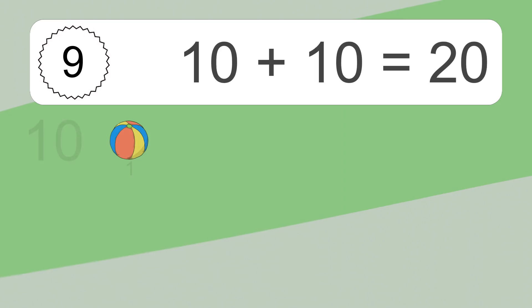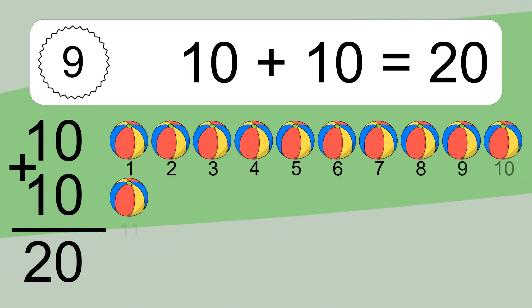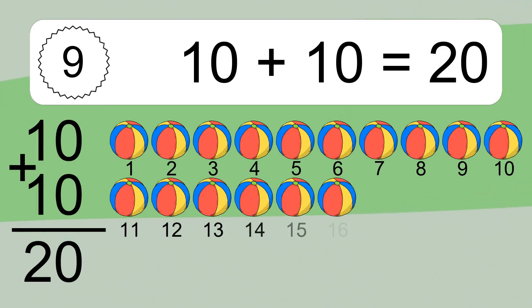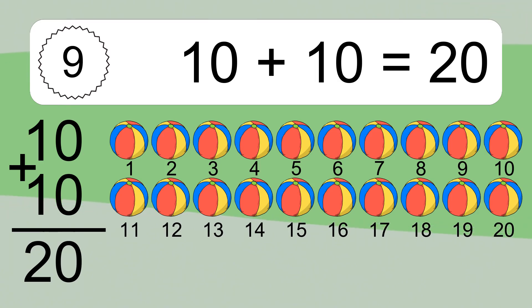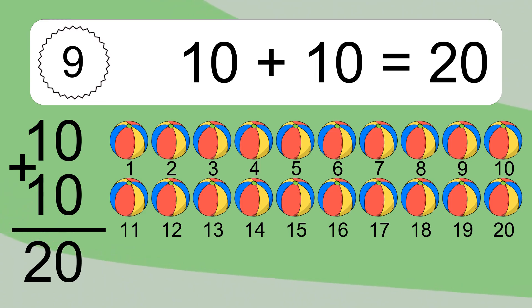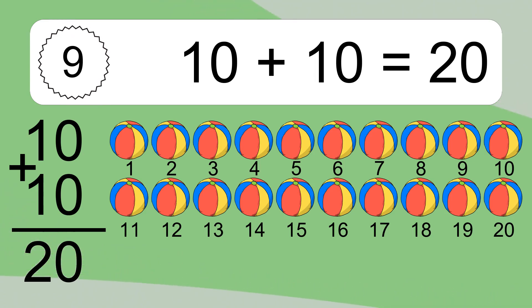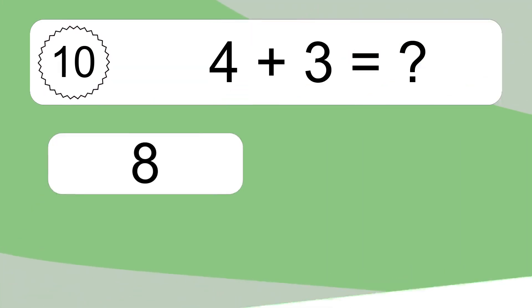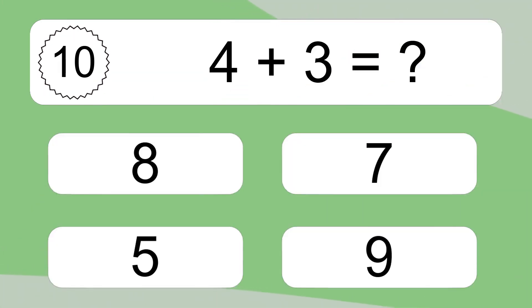10 plus 10 equals 20. Let's count it: 1, 2, 3, 4, 5, 6, 7, 8, 9, 10, 11, 12, 13, 14, 15, 16, 17, 18, 19, 20.